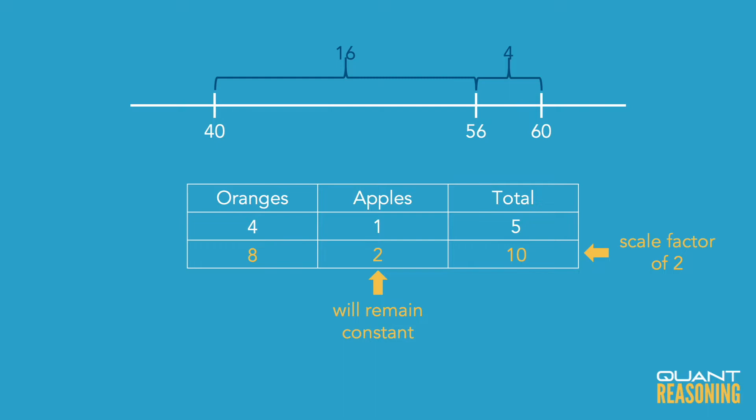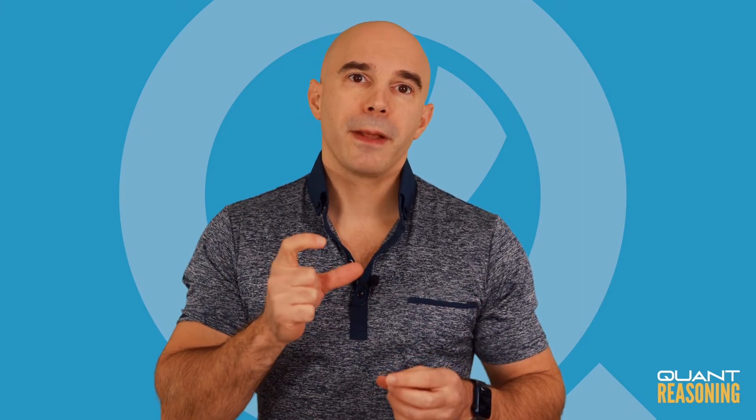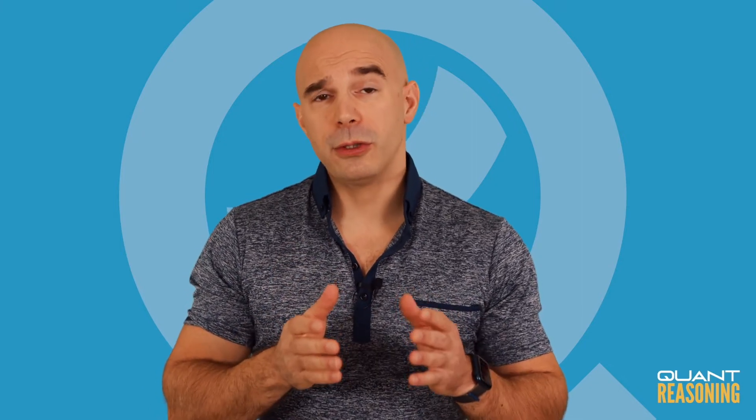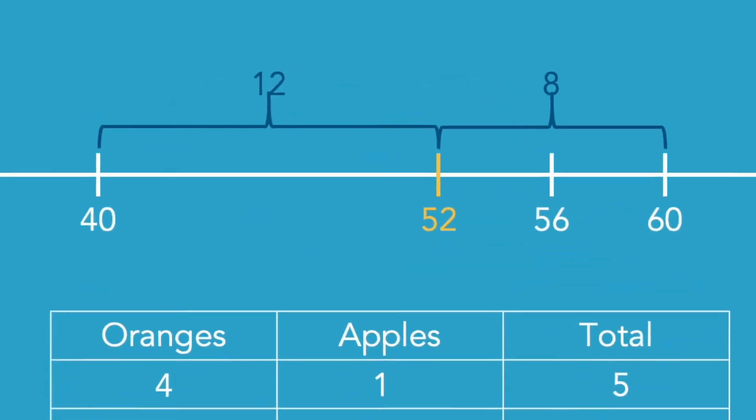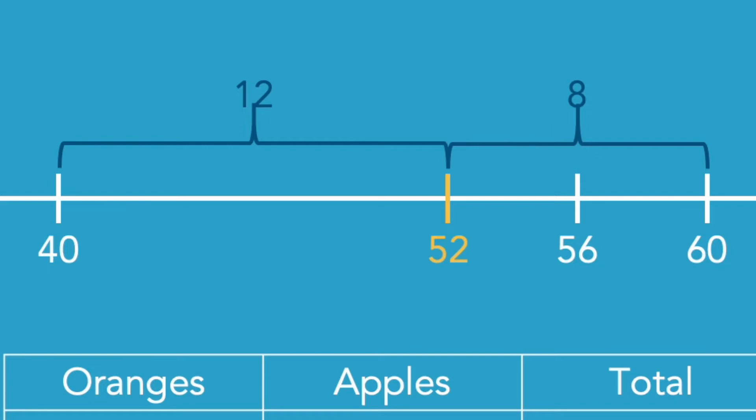We have two apples, and it turns out the average price after she returns some oranges drops to 52 cents. The average price drops because oranges are the more expensive fruit, so putting some back lowers the average. Where is 52 on the number line between 40 and 60? The distances on either side of 52 are 12 and 8, so that's a ratio of 3 to 2.